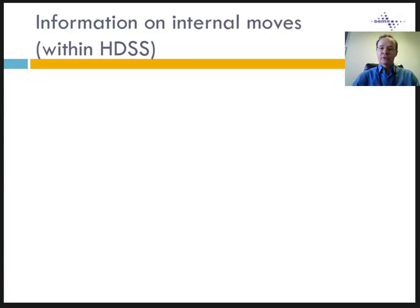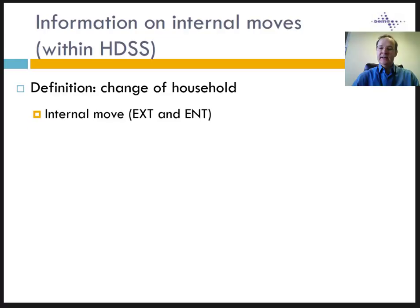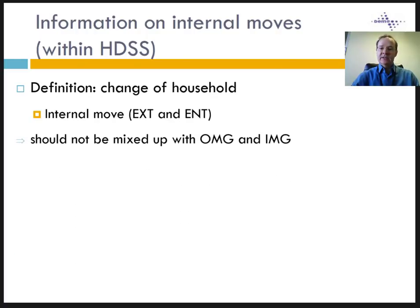Another issue related to change of residence is that of internal moves within the study area. In an HDSS, people can change household. An internal move is defined as a change of household within the study area, identified by the exit event from the household of origin and the entry event into the household of destination — the exit must precede the entry. Internal moves should not be mixed with migrations, which are defined as changes of residence involving crossing the study area boundaries. Out-migration from the HDSS is identified as OMG, and in-migration as IMG.